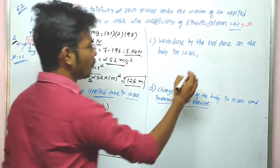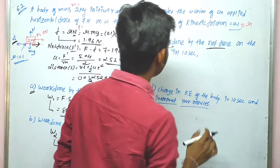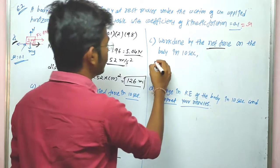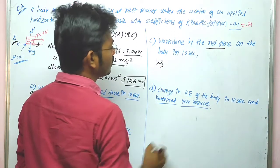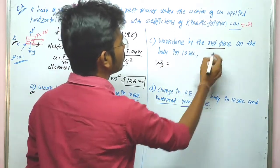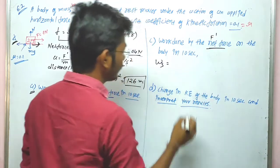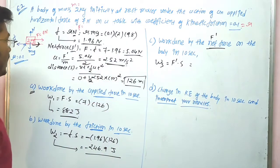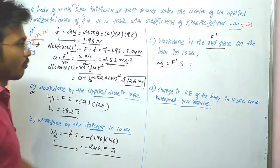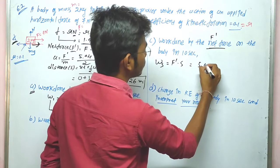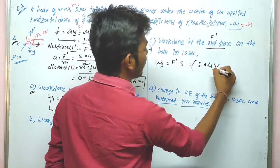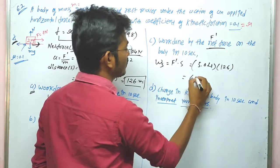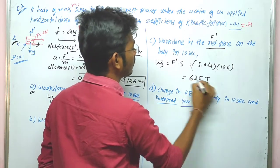Work done by the net force on the body in 10 seconds: W3 = F' × s = 5.04 × 126 = 635.2 J.